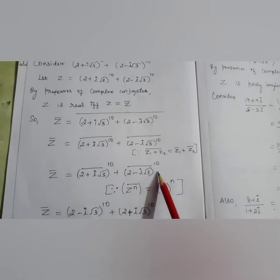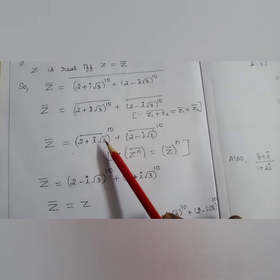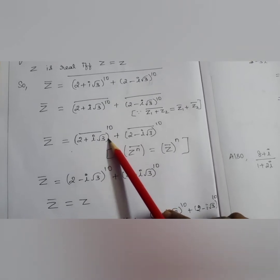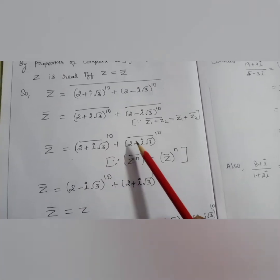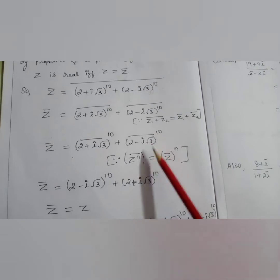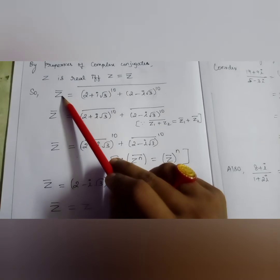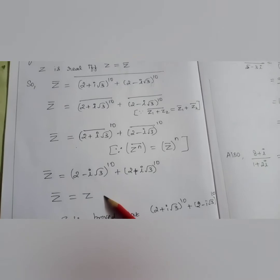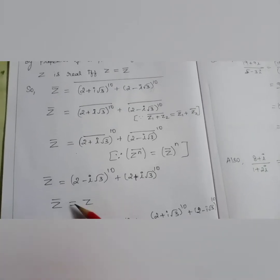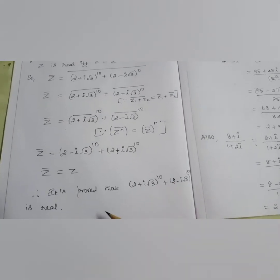Now, (2 + i√3) bar means the conjugate — replacing plus by minus gives (2 − i√3)^10, and the conjugate of (2 − i√3) is (2 + i√3)^10. We started with z̄ and converted it, and ended up with z. So z = z̄, which means it is proved that (2 + i√3)^10 + (2 − i√3)^10 is real.